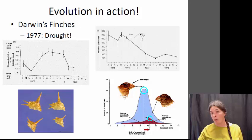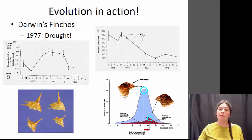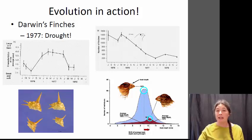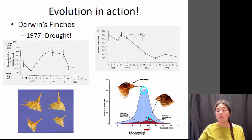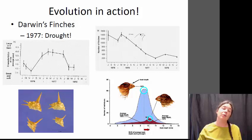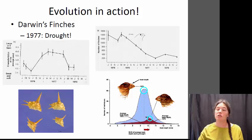Interestingly, when the drought broke and the plants bloomed and small seeds were available again, the beak size actually shifted back. That's because when seeds were abundant, the smaller-beaked birds had an advantage, because they were more easily able to crack and manipulate small seeds. So they had an advantage over the larger-beaked birds.